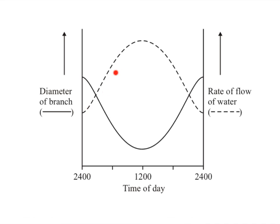As it gets brighter, light intensity increases, more stomata open, there's a greater rate of transpiration and more tension. The fact that there's more tension means the branch diameter mirrors the rate of flow — an increase in tension creates a suction that narrows the xylem. So the faster the rate of movement, the narrower the xylem, because there is more tension.